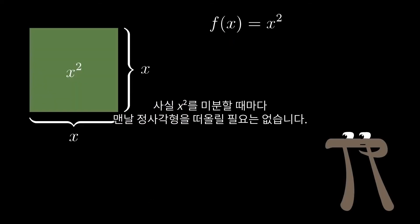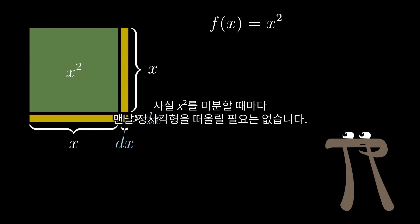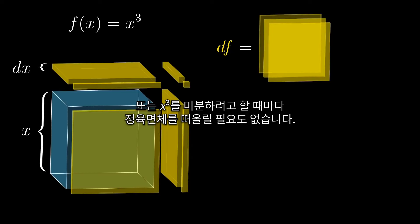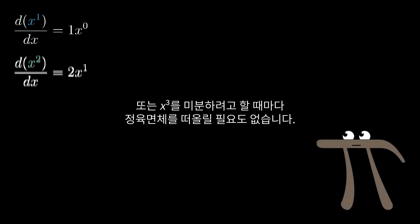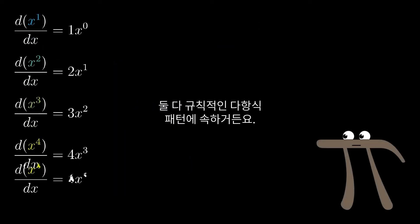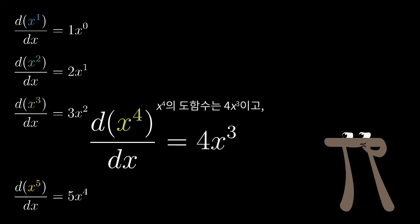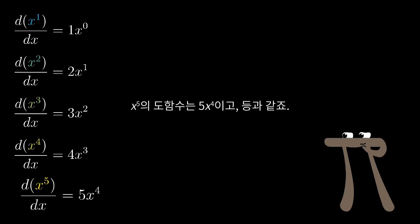Now in practice, you wouldn't necessarily think of the square every time you're taking the derivative of x squared, nor would you necessarily think of this cube whenever you're taking the derivative of x cubed. Both of them fall under a pretty recognizable pattern for polynomial terms. The derivative of x to the 4th turns out to be 4x cubed, the derivative of x to the 5th is 5x to the 4th, and so on.